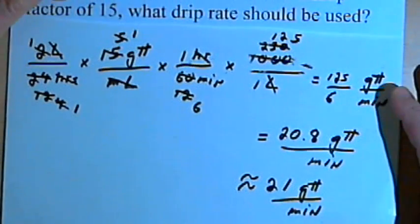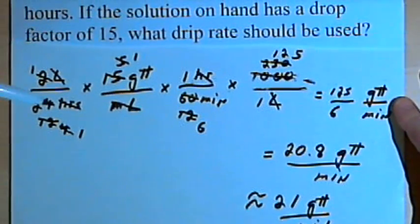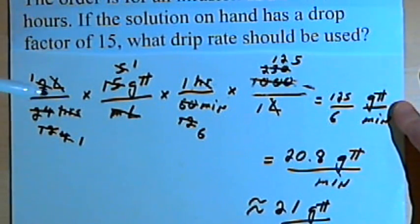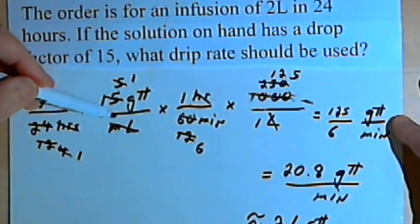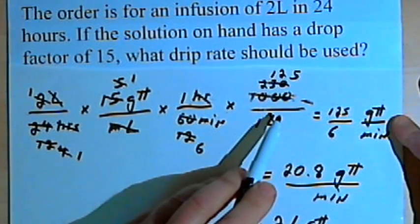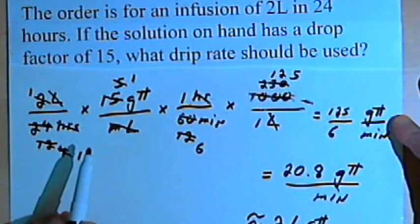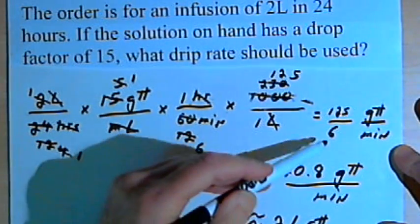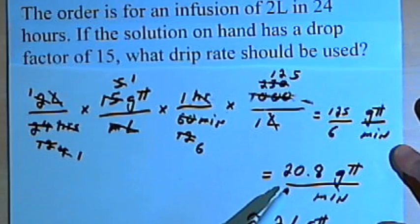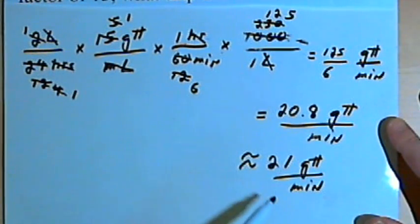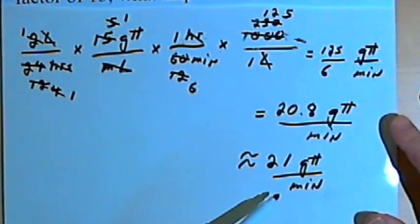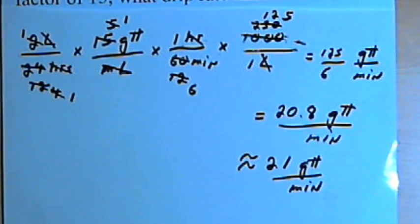Once again, we used the same approach. We took the order, multiplied it by the drop factor, used whatever conversions we needed, and cancelled out everything we could to get our answer. Since it was a fraction, we converted it to a decimal and then rounded it. That's about it. I hope this helps. Take care and I'll see you next time.